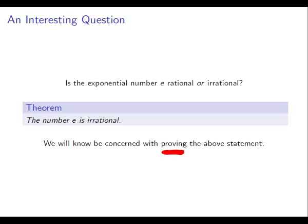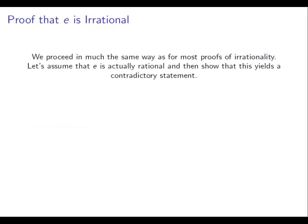What we're going to do now is prove this statement. The proof's not too difficult to follow, but you might want to follow along with a piece of paper and a pen, make notes, and you might have to go back and refer to things earlier. We're going to proceed in the same way that we do for most proofs of irrationality. To show that something's irrational, we assume that it is actually rational, and then we show that this assumption yields a statement which is contradictory. A world where e is rational is flawed — there's something very, very wrong with it. This forces us to reject our assumption, and that will make us accept that e is actually irrational.